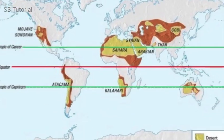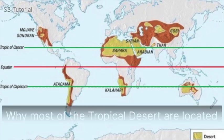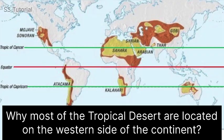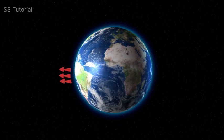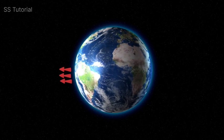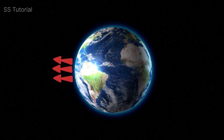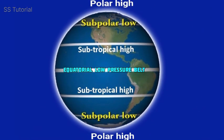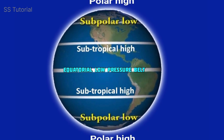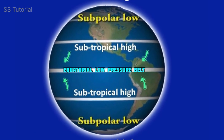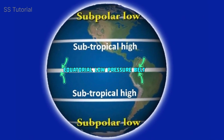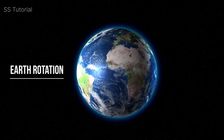Have you ever thought why most of the tropical deserts are situated on the western edge of the continent? Today in this video we are going to discuss all the factors responsible for it. The equatorial region gets more heat energy throughout the year as vertical or direct sunlight falls on it, so air near the equator becomes warm and light, expands and rises upward, creating a low pressure zone. Cold and heavy air then flows from subtropical high pressure belts towards the equatorial low pressure belt — known as trade winds.